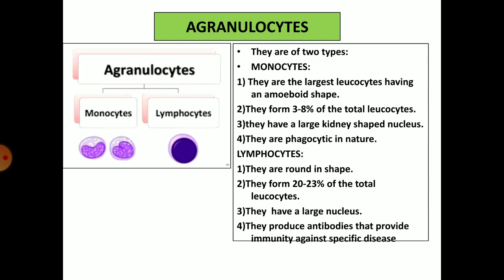Agranulocytes are divided into two types: monocytes and lymphocytes. Monocytes are the largest leukocytes, having an amoeboid shape. They form 3–8% of the total leukocytes and can be recognized by their large kidney-shaped nucleus. They are basically phagocytic in nature. Lymphocytes are round in shape and form 20–23% of the total leukocytes. They have a large nucleus which almost occupies the entire space of the cell. They produce antibodies and provide immunity against specific diseases.